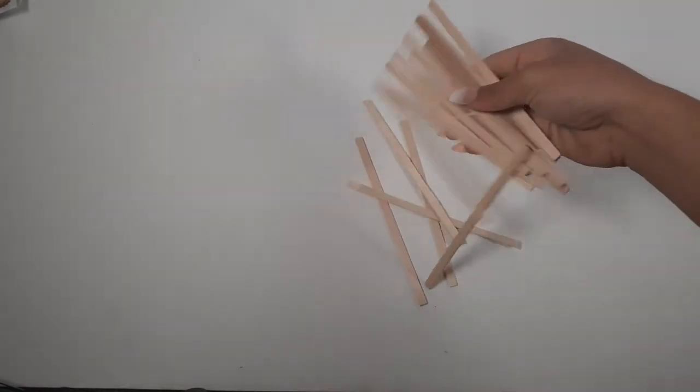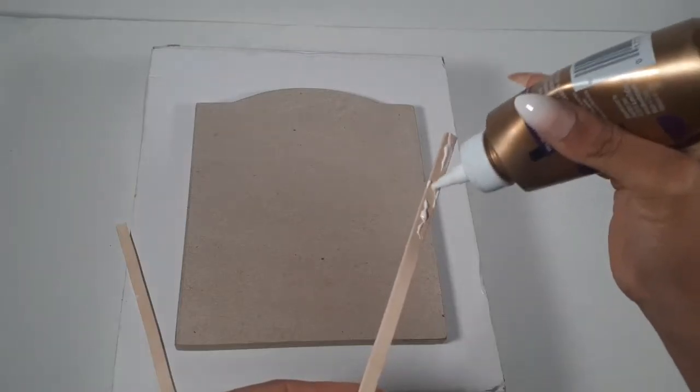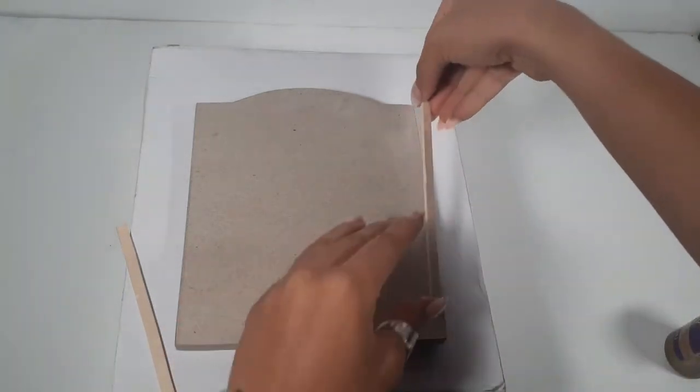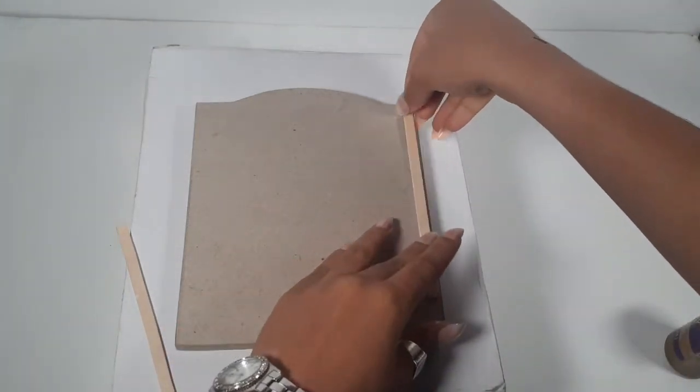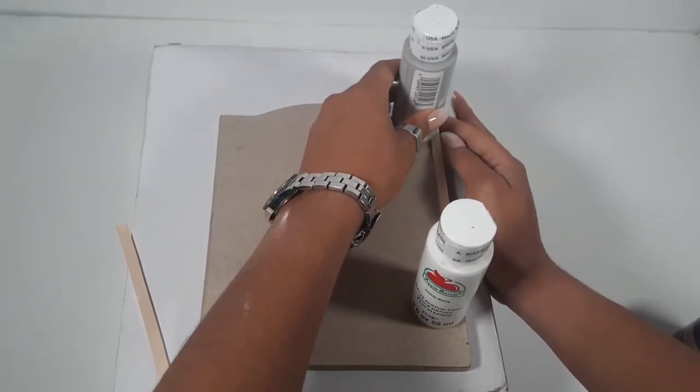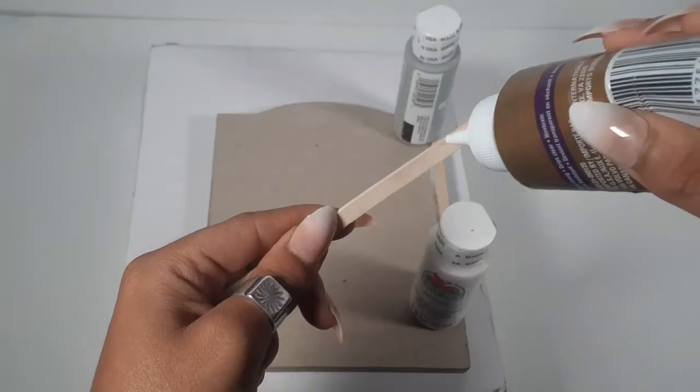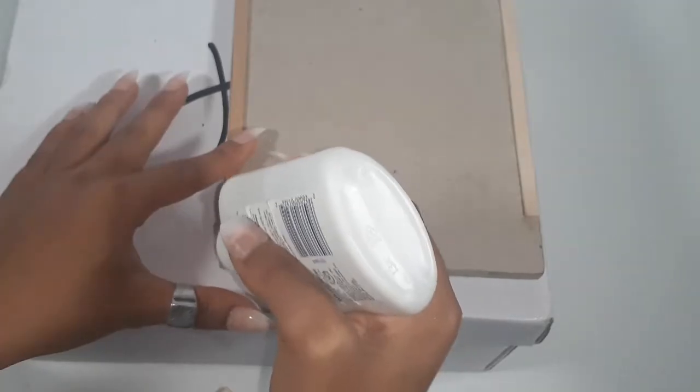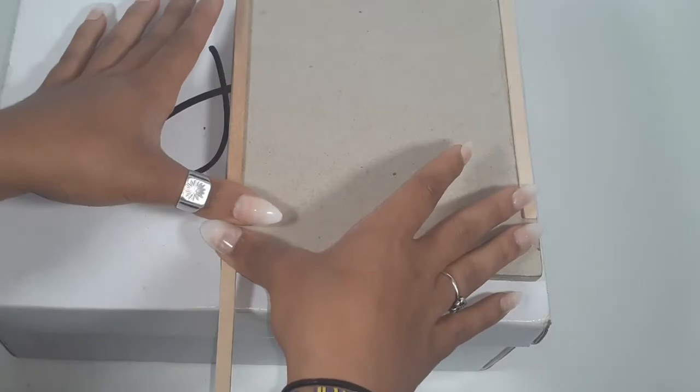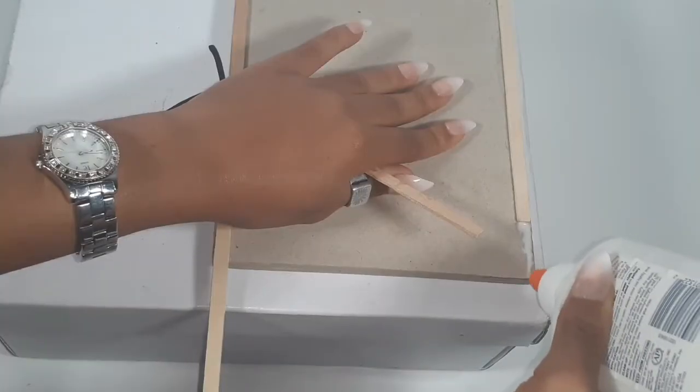Now we can start working on the frame. I'm going to be using just skinny sticks I got from Walmart. Keep the skinny sticks from maneuvering around, you want something to hold them down and I'm using paint bottles. I'm going to be gluing two more skinny sticks at the bottom for the legs.